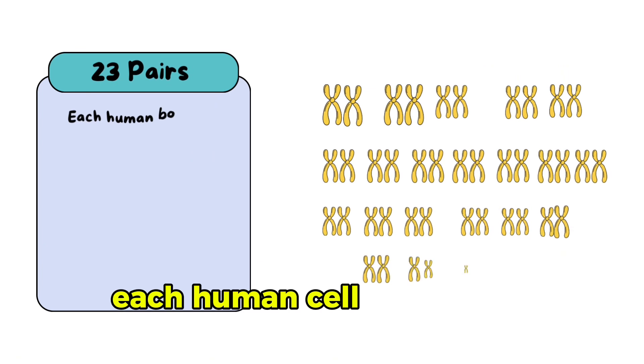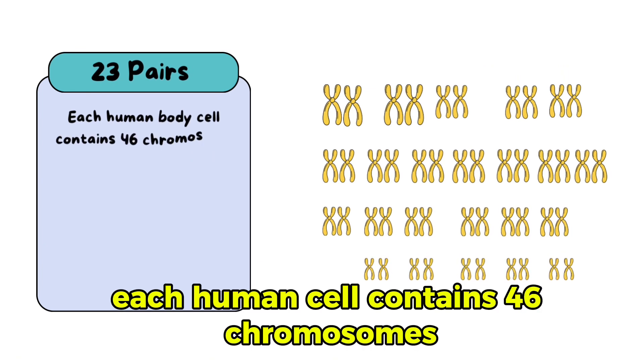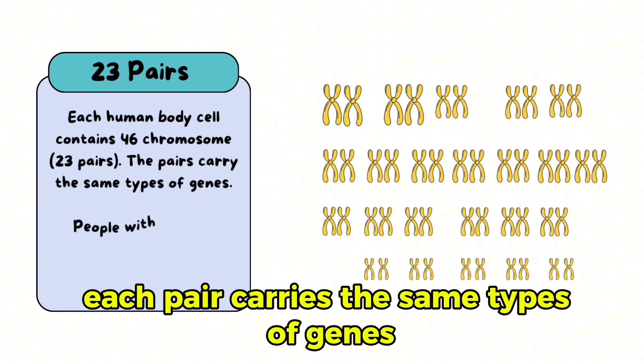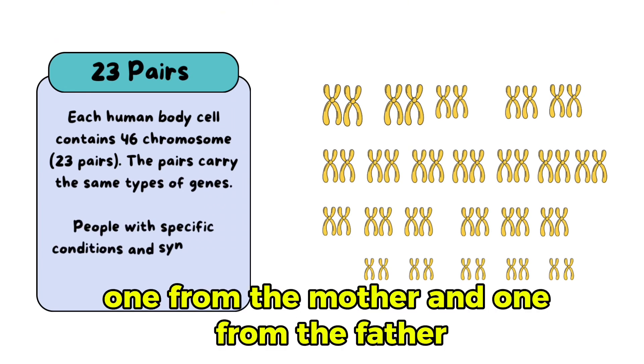Each human cell contains 46 chromosomes, that's 23 pairs. Each pair carries the same types of genes, one from the mother and one from the father.